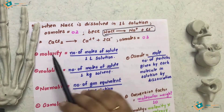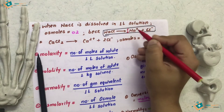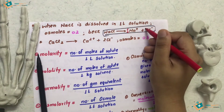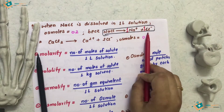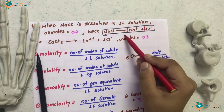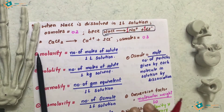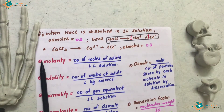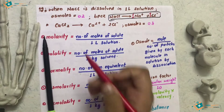NaCl dissociates into Na⁺ and Cl⁻. You already know this balancing equation from classes 11 and 12. So we get 1 Na⁺ and 1 Cl⁻ — that is one particle and one particle. So when you have 1 mole of NaCl in 1 liter of solution, you have 2 Osmol.